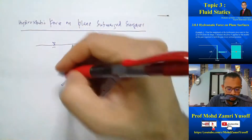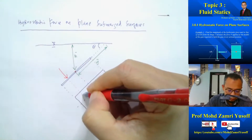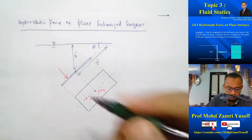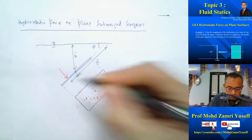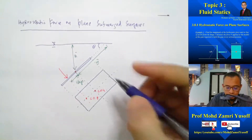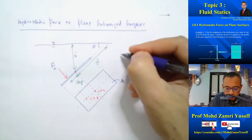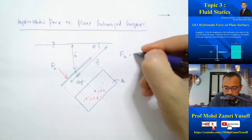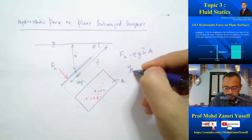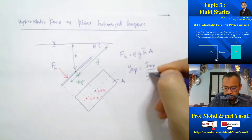The force will be acting slightly below, through a point which we call the COP. The distance between the COG and COP is what we call YCP. The area of the surface is A. So the magnitude of the hydrostatic force is equal to ρgH̄A, and then YCP is equal to I_XX over Y̅A.